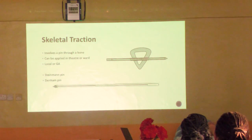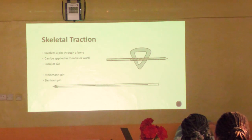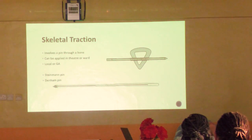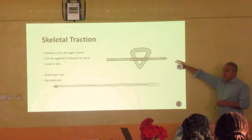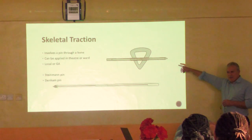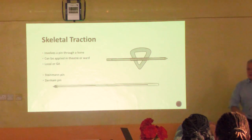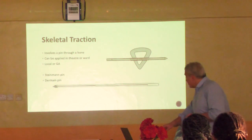With skeletal traction, we put a pin through bone so we can apply more solid traction and hang bigger weights. It can be applied in theatre or on the wards under local or general anaesthetic. In my training I'd be asked to put a pin through a tibial tubercle or distal femur on the ward in elderly hip fracture patients, and my experience was that they tolerated it very well. I prefer threaded Denham pins rather than smooth Steinmann pins - they are far better because they don't allow the bone to slip.